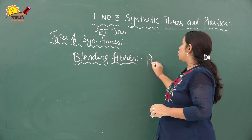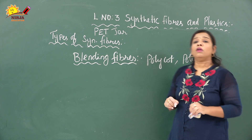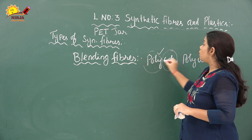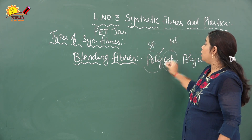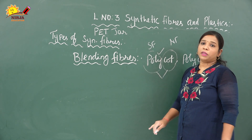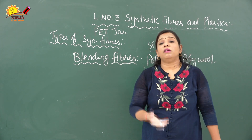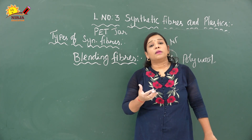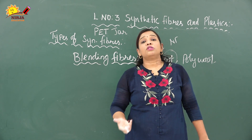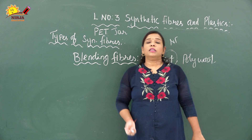Examples of blended fibers include polycot, which is a combination of polyester and cotton, and poly wool, which is a combination of polyester and wool. Terylene mixed with wool produces terry wool, and terylene combined with cotton produces terry cotton. These are examples of how synthetic and natural fibers combine to create different fabric materials used in various dress materials. I hope you have understood blended fibers. Thank you, have a nice day.